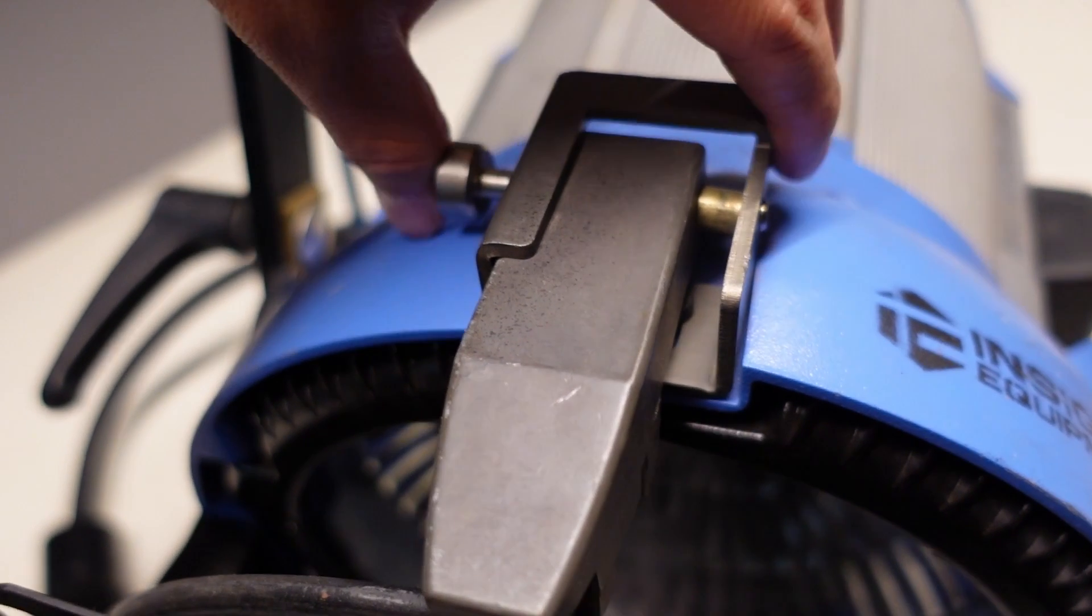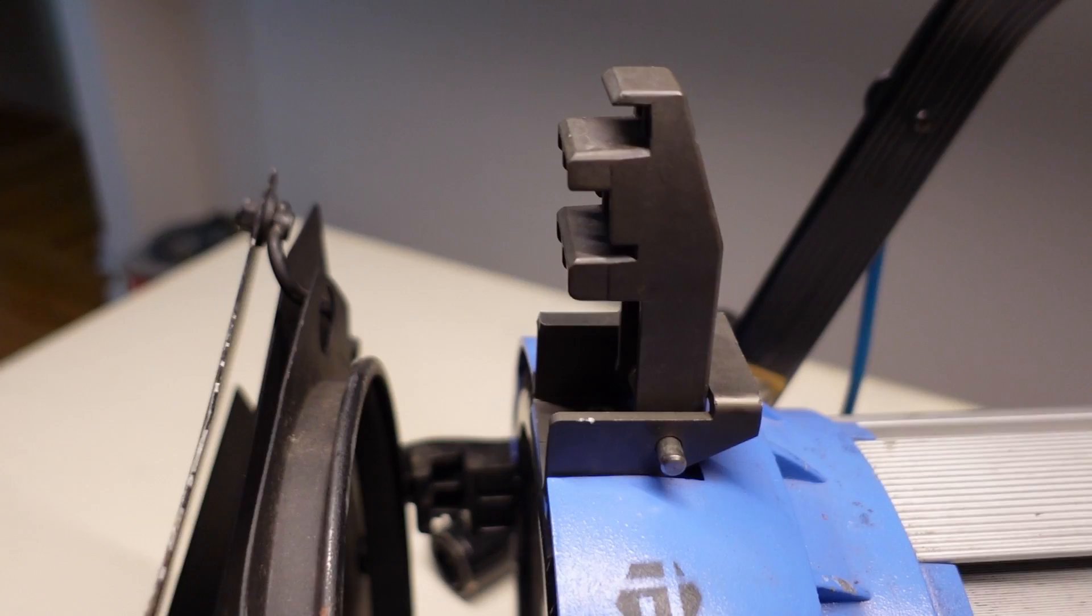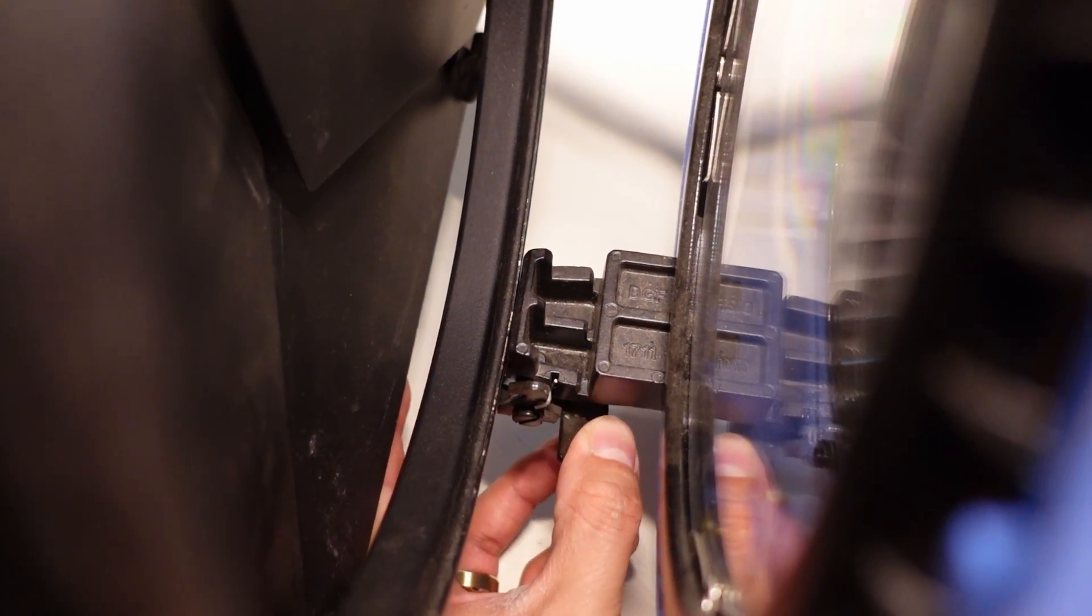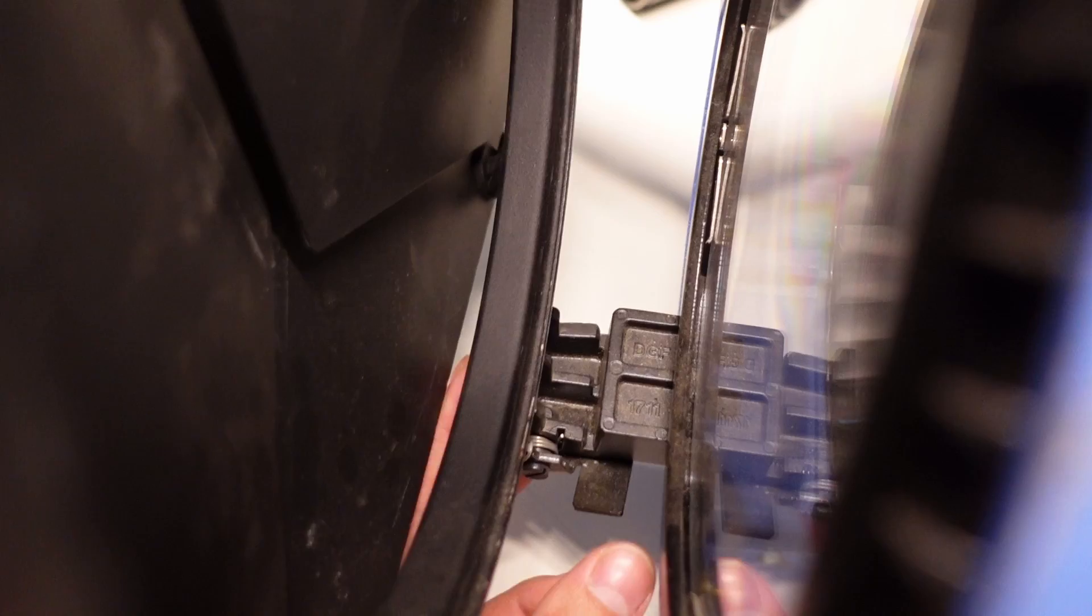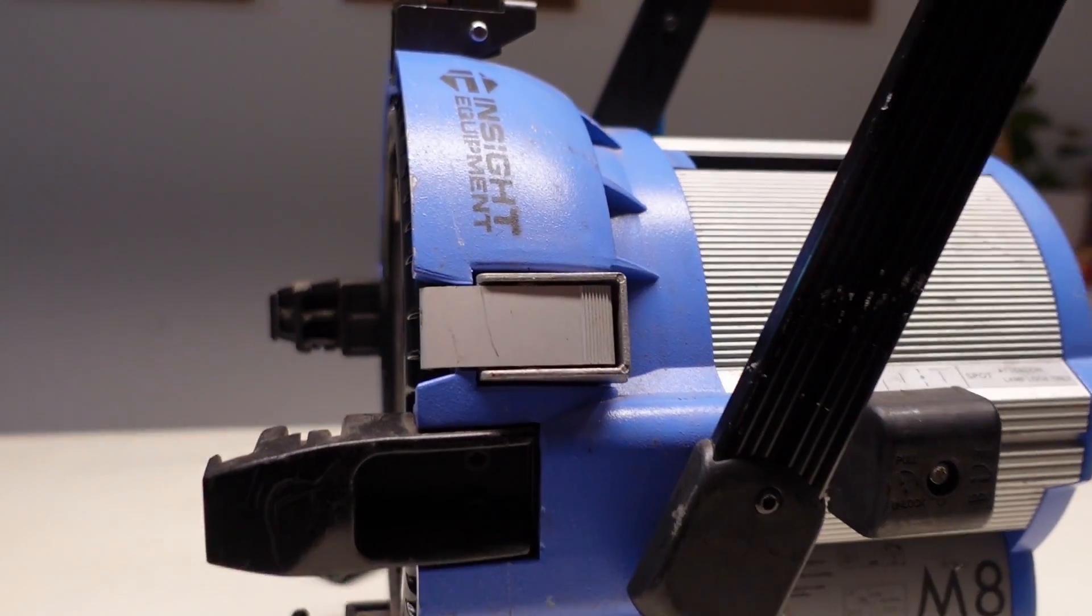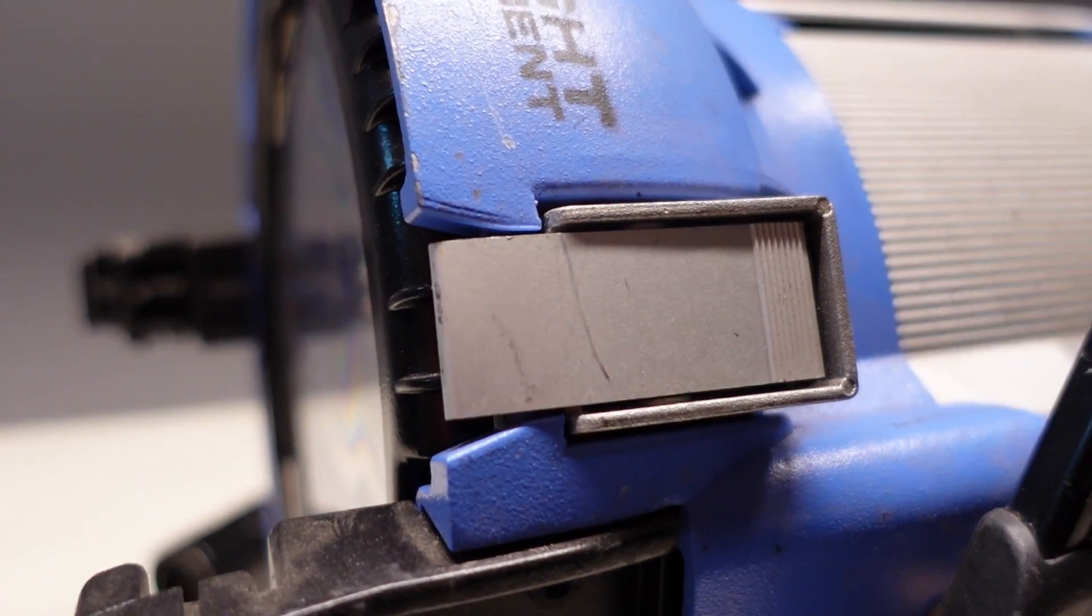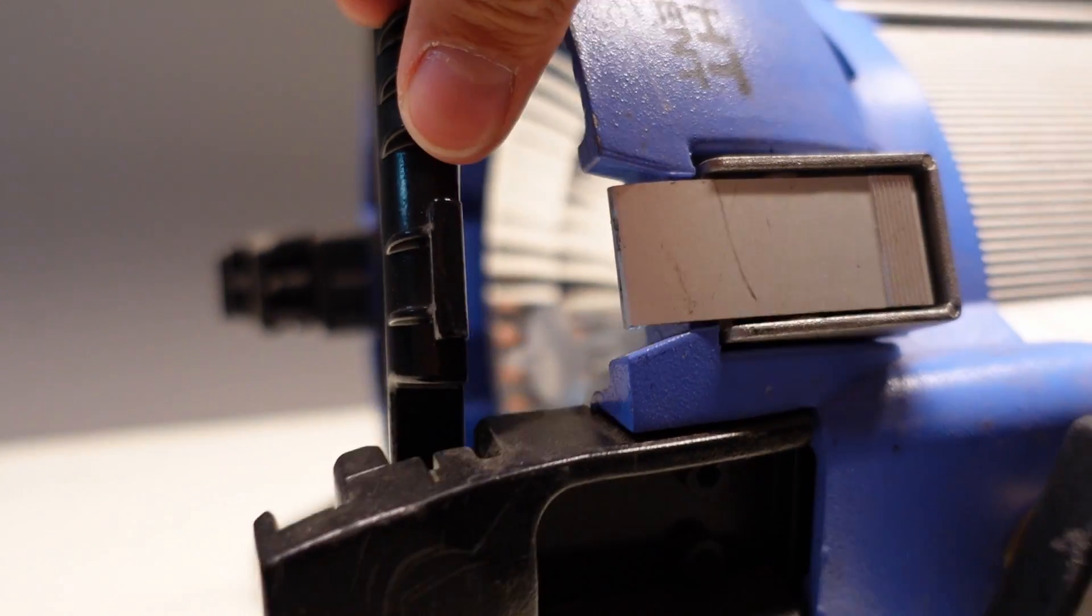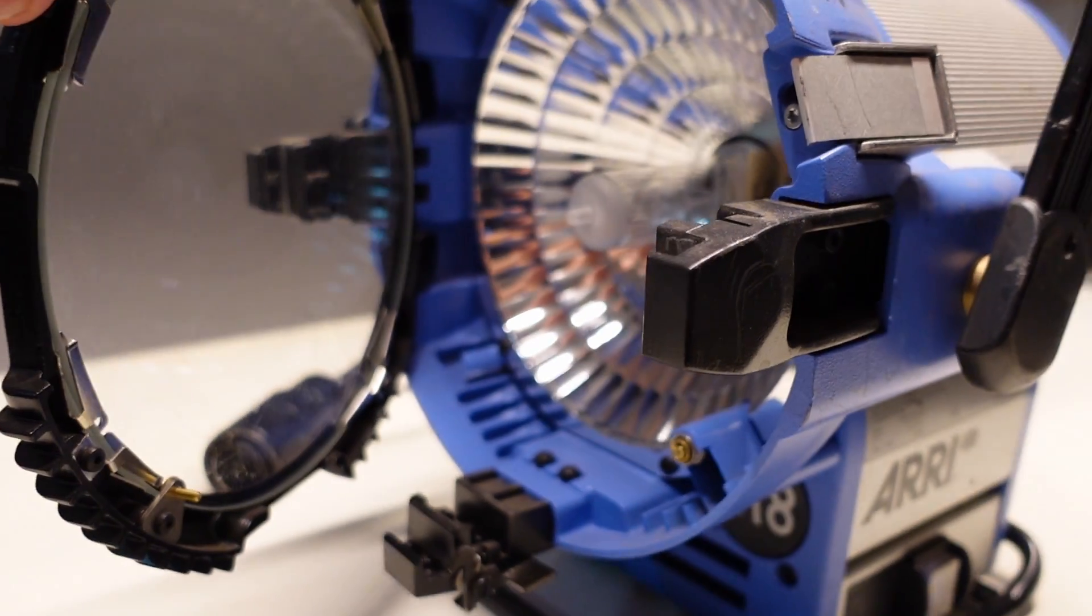To change the bulb or quality check the bulb in the socket, you want to take off the barn door first with these two latches, the top and the bottom. Then on the side of the lamp, you should see this button. This is the latch to the door, so you just want to press that to open the glass door to reveal the bulb.